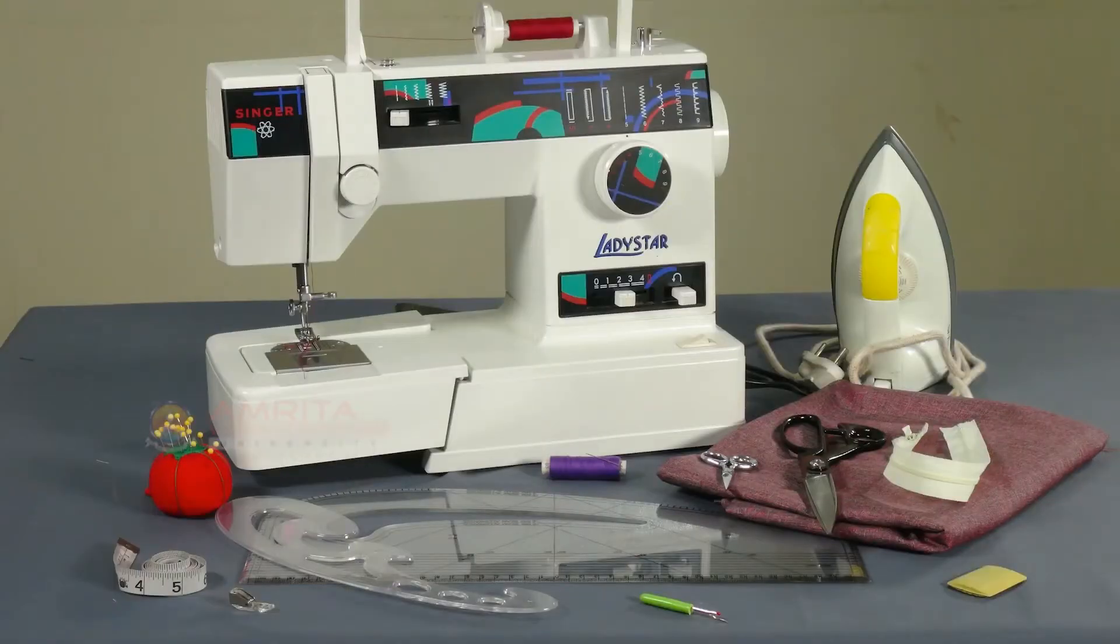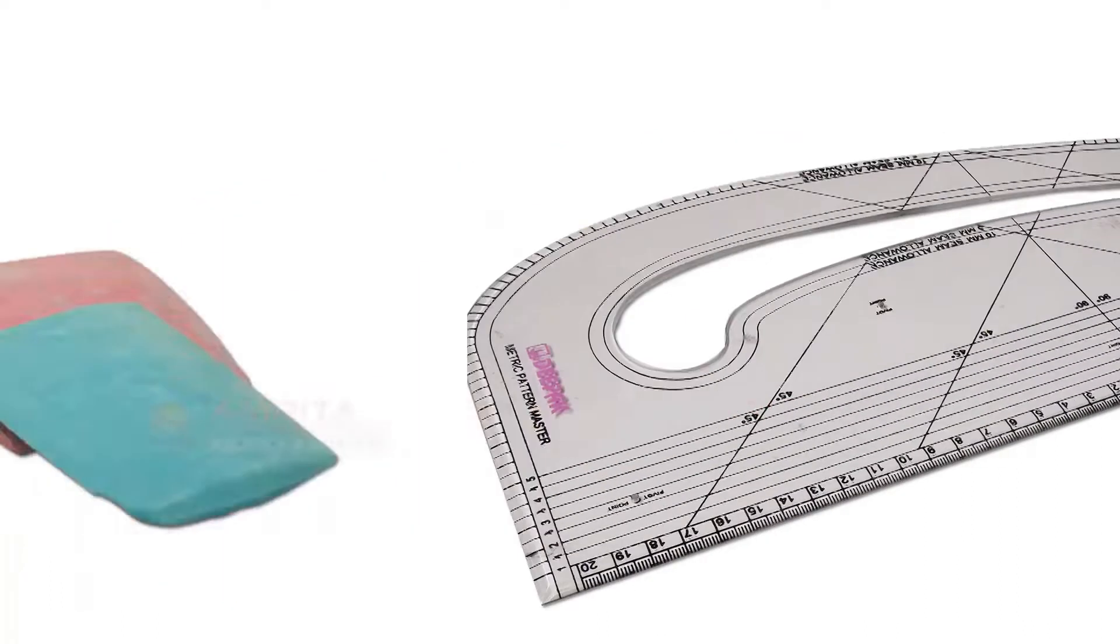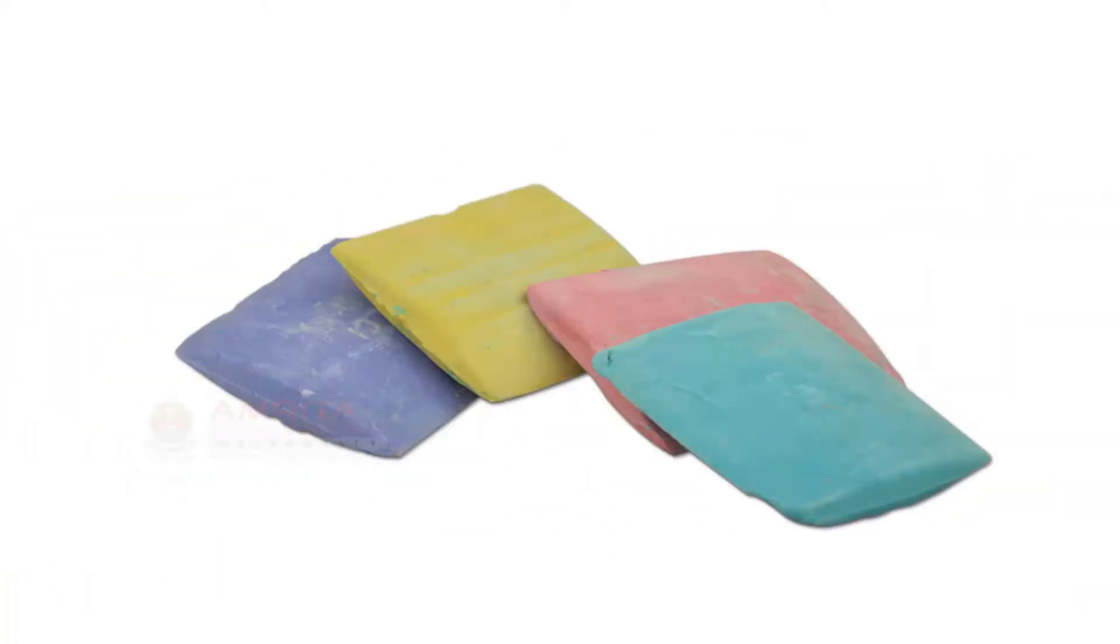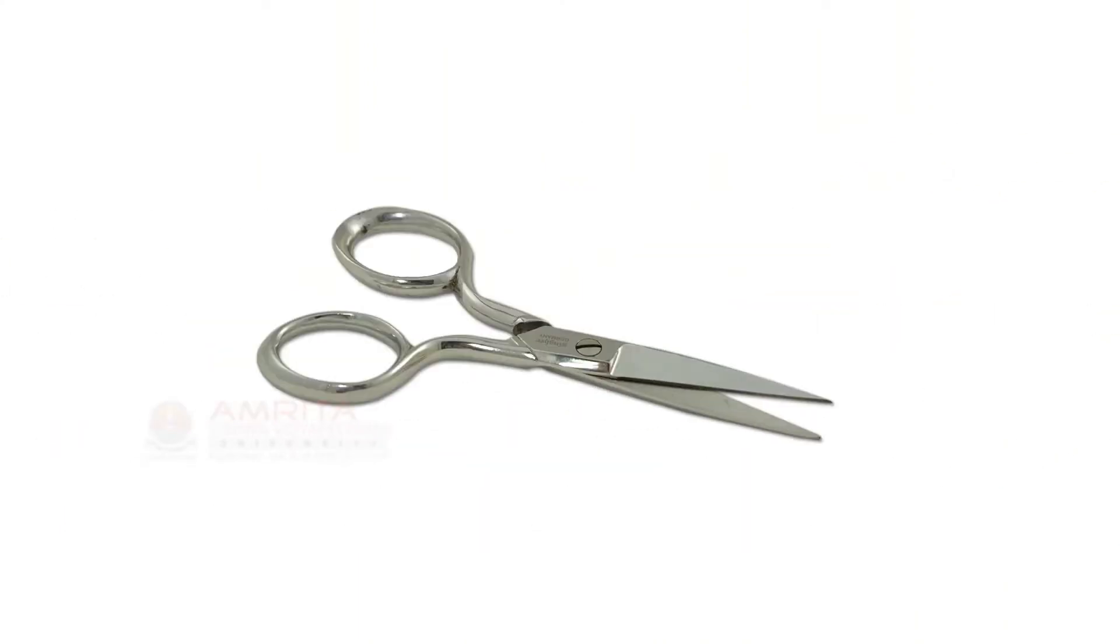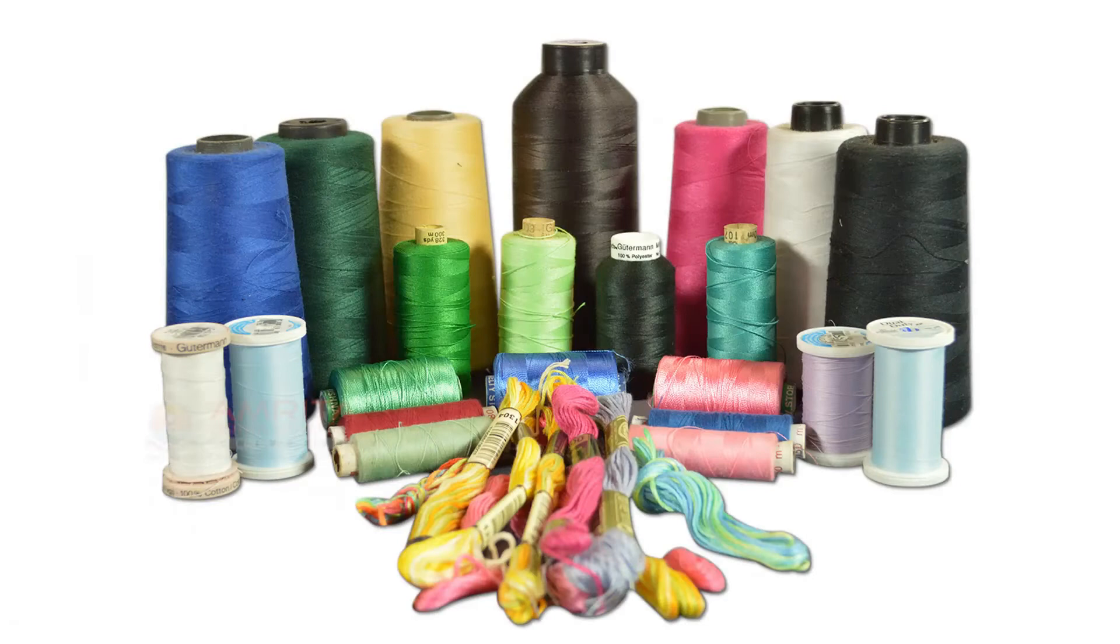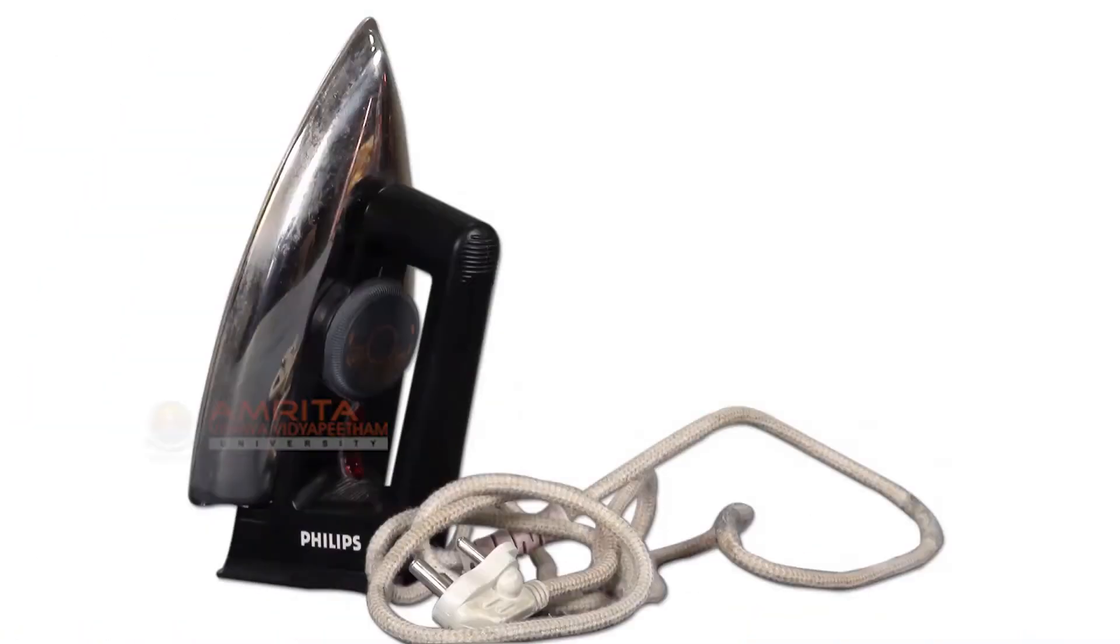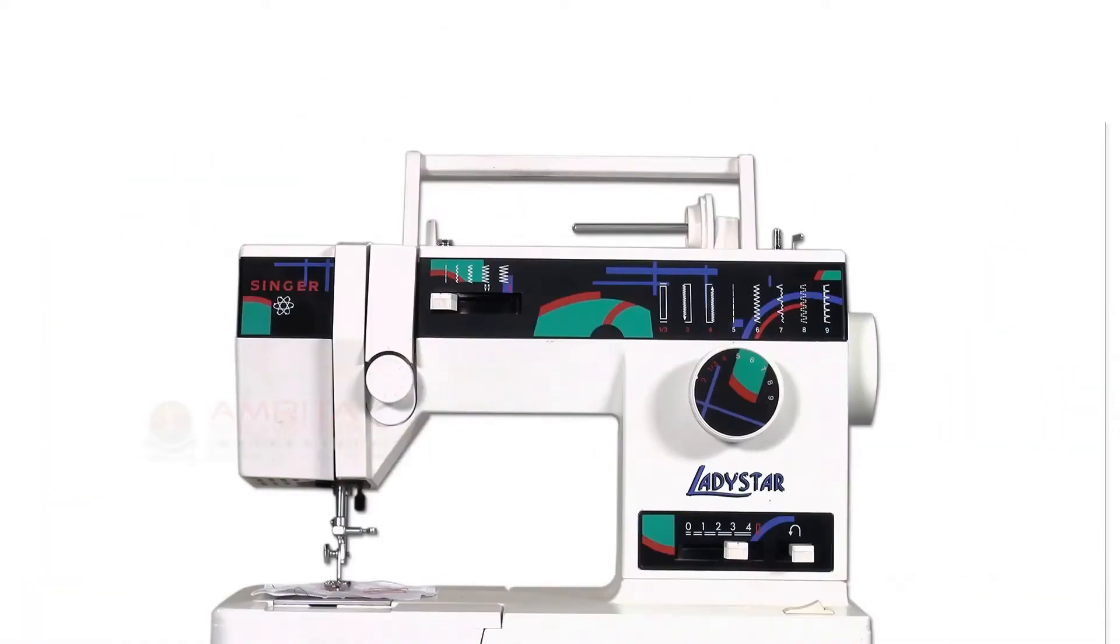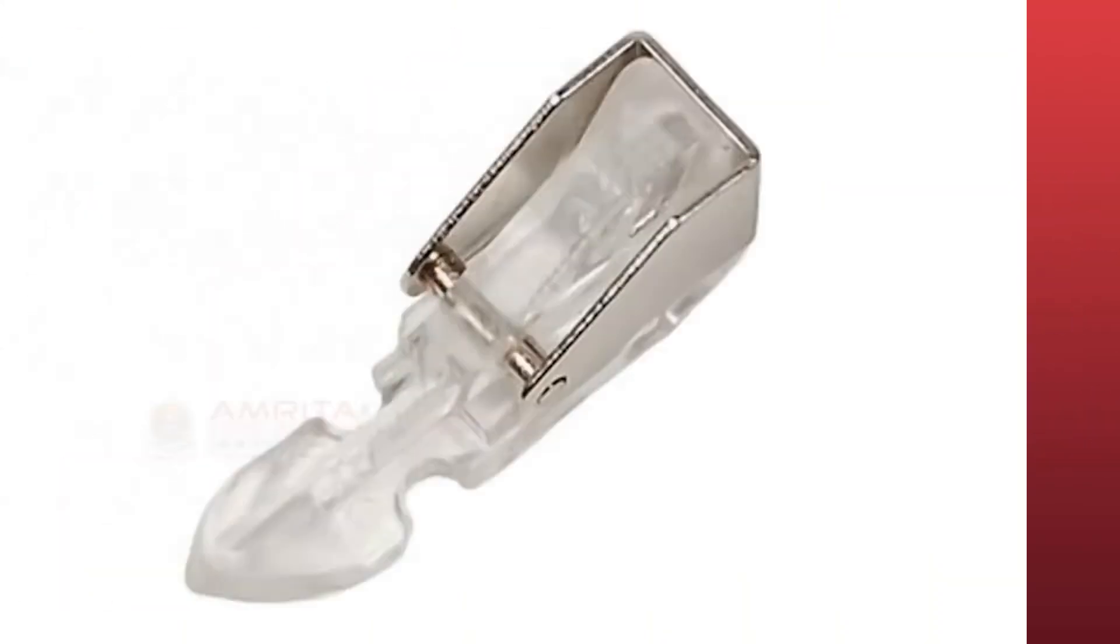Let us first familiarize with the tools and materials that you would need to stitch a lapped zipper placket. You would need cotton fabric, pattern square, tailor's chalk, straight pins, shears, a pair of small scissors, contrasting thread, zipper, iron box, sewing machine, measuring tape, seam ripper, and zipper foot.